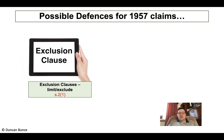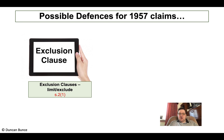Exclusion clauses — something we'll cover more in contract law — also apply here. Under Section 2, Subsection 1 of the 1957 Act, it is possible by agreement for the defendant to exclude or limit liability for any injury. For example, if you get something signed before a person goes onto your premises, that could be a viable defence. Clearly you can't exclude liability for death, but personal injury is certainly possible.